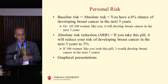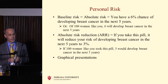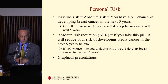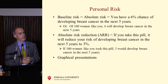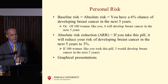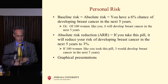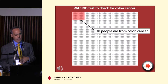Here are examples to nail down this distinction. Personal risk: you can tell a person their baseline risk — you have a 6% chance of developing breast cancer in the next five years, or of 100 women like you, 6 will develop breast cancer in the next five years. You can describe risk reduction: if you take this pill, it'll reduce your chance of developing breast cancer in the next five years to 3%, or if 100 women like you take this pill, 3 will develop breast cancer.